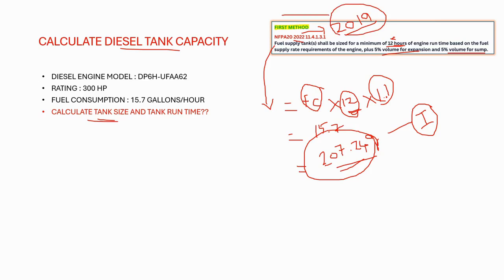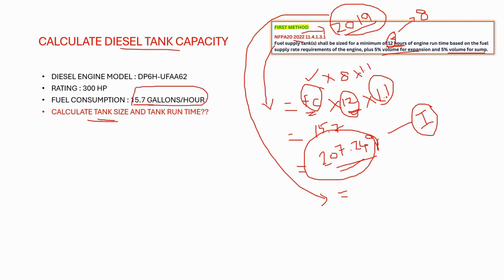Now we will calculate using the 2019 edition. As per the 2019 edition, the 12 hours is changed to 8 hours. So: fuel consumption 15.7 × 8 × 1.1 = approximately 138 gallons. Which edition you need to consider depends upon the project specification requirements — you need to select the tank accordingly.